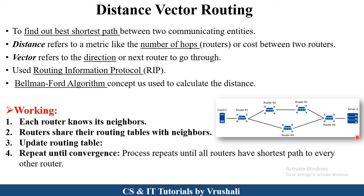For example, in this diagram, suppose client C wants to send information to server S. Multiple routers are present in between, connecting multiple networks. Router R1 sends information to router R4. R2 and R4 are the neighbor nodes, which is called vector — the next node. Distance means the distance between R1 to R4 and R4 to RF10. Distance vector routing uses RIP (Routing Information Protocol) to find out the shortest path, and also uses the Bellman-Ford algorithm to calculate the distance between routers.